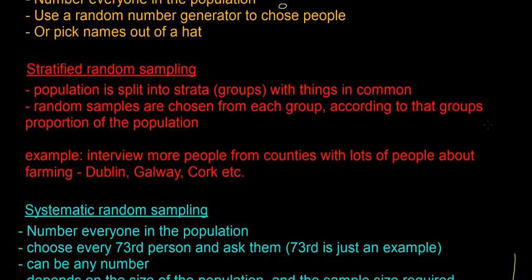Stratified random sampling is quite a good one. The population is split up into strata, which are basically groups with things in common. Then random samples are chosen from each group according to that group's proportion of the population. So for our example, if you're interviewing everyone in Ireland, you interview more people from counties with lots of people — like Galway, Dublin, and Cork — and not too many people from counties with a small population.